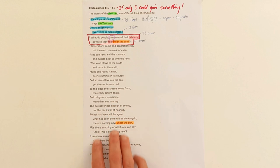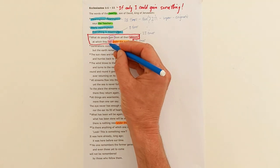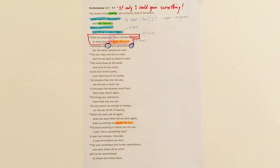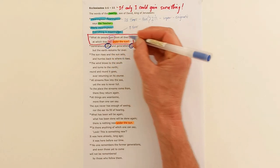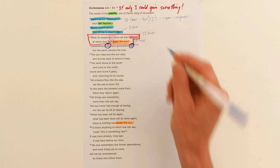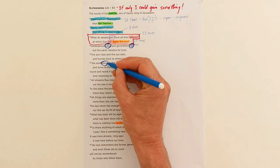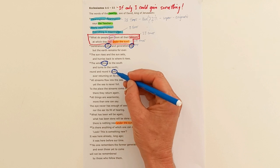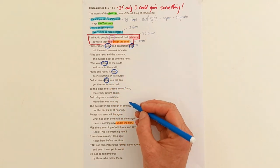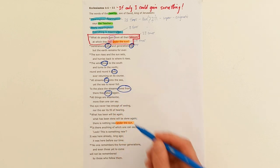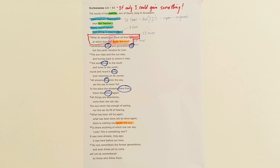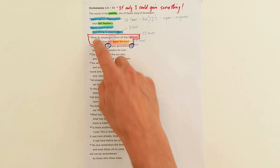From this poem that follows in verses 4 to 11, the answer that Mr. Teacher wants us to see is that you gain nothing from all your toils under the sun. Generations come and go—actually it should be generations go and generations come. One generation goes, the next one replaces it. The wind blows round and round it goes. All the streams flow, they return to the place where they come from.